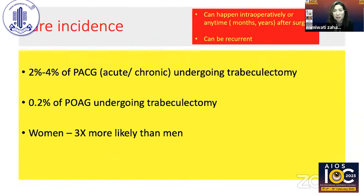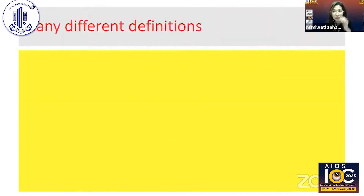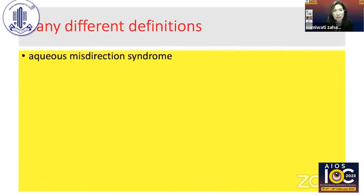Malignant glaucoma can happen anytime — either intraoperatively or even months or years after surgery — and it can also be recurrent, especially if you don't treat it well or don't perform the definitive treatment.